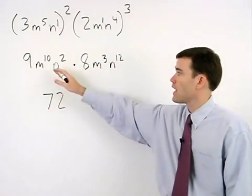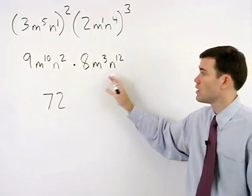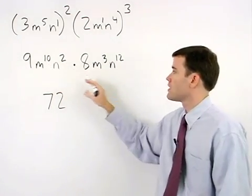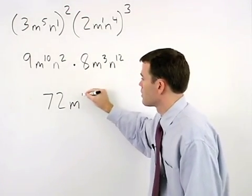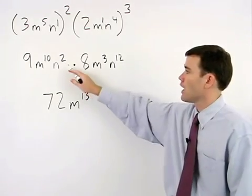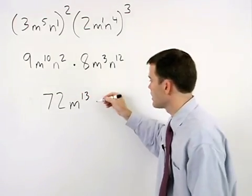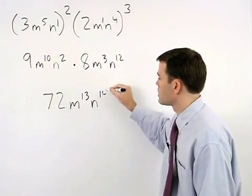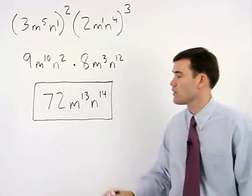But we must add the exponents on the like bases. So m to the tenth times m to the third is m to the thirteenth. And n squared times n to the twelfth is n to the fourteenth. So our answer is 72 m to the thirteenth n to the fourteenth.